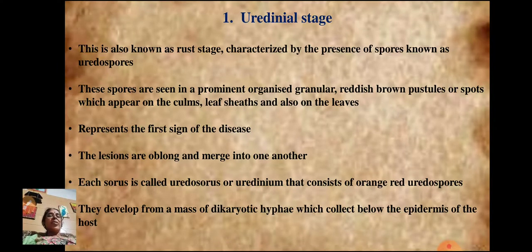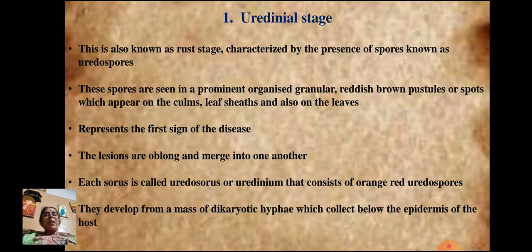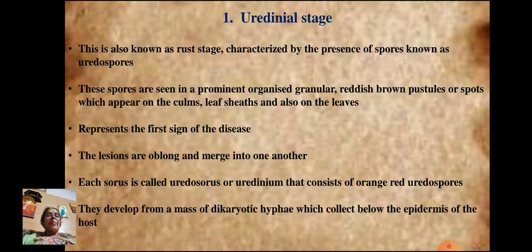Coming to the uredinal stage, also known as the rust stage, it is characterized by spores known as uredospores. These spores are seen as prominent, organized, granular, reddish-brown spots appearing on culms, leaf sheaths, and leaves — representing the first sign of disease. The lesions are oblong and merge into one another. Each sorus is called a uredosaurus or uredinium, consisting of orange-red uredospores that develop from a mass of dikaryotic hyphae collecting below the epidermis of the host tissue.